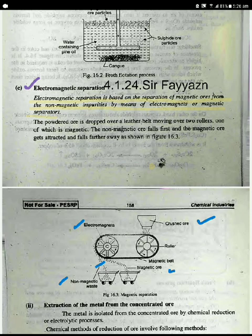Let's look at the reading. The powdered ore is dropped over a leather belt moving over two rollers. One of which is magnetic, the non-magnetic ore falls first and the magnetic ore gets attracted and falls farther away.